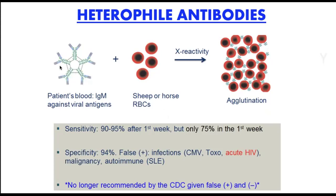When a patient has IM, the IgM or heterophile antibodies react with RBCs and cause agglutination. As disease progresses, the sensitivity of heterophile antibody assays increases. However, false positives also occur with cytomegalovirus infection, toxoplasma, acute HIV, and SLE. So it is no longer recommended as the sole basis for detection — it serves as an add-on to help identify Epstein-Barr infection.